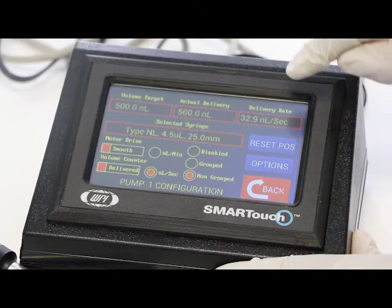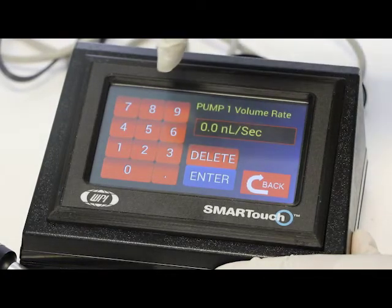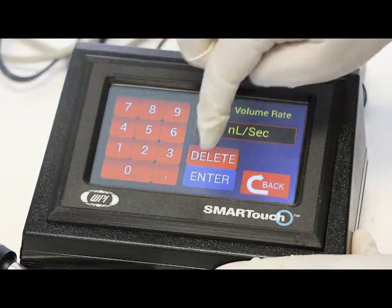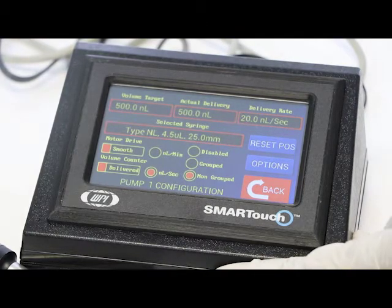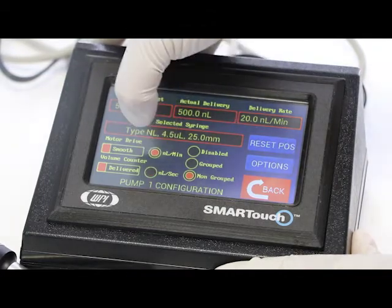Now you want to adjust the delivery rate. What's the nano-liter per second that you want to deliver or the rate that you want to deliver? 29 nano-liter per second. And then we have other options that you can use. You can either do it nano-liter per minute or nano-liter per second.